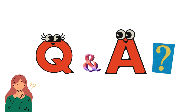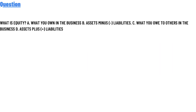Today's question is: what is equity? Option A: what you own in the business. Option B: assets minus liability. Option C: what you owe to others in the business. Option D: assets plus liability. The correct answer is assets minus liability.